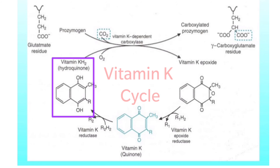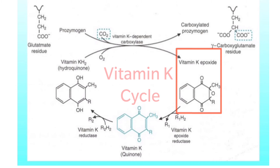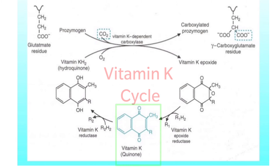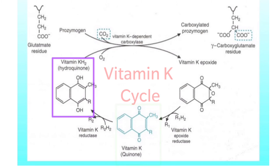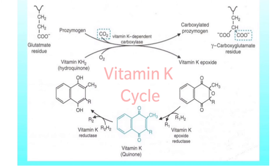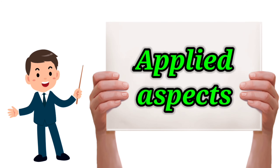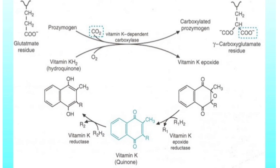In all these carboxylation reactions, vitamin K undergoes cyclical changes. Before carboxylation, vitamin K is in the form of hydroquinone; on carboxylation it converts into vitamin K epoxide. From this epoxide, it is converted to the vitamin K quinone form by the enzyme vitamin K epoxide reductase, where reduced lipoic acid is converted to oxidized lipoic acid. This quinone form of vitamin K is then converted back to hydroquinone by NADPH-dependent vitamin K reductase, thereby completing the cycle.